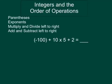Integers and the order of operations. Let's review our order of operations. First we start with parentheses, then exponents, then multiply and divide left to right, then add and subtract left to right.